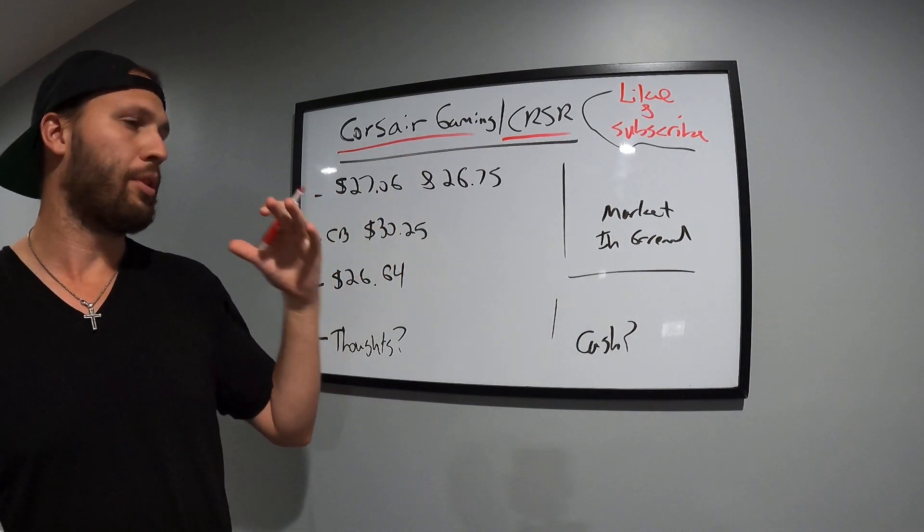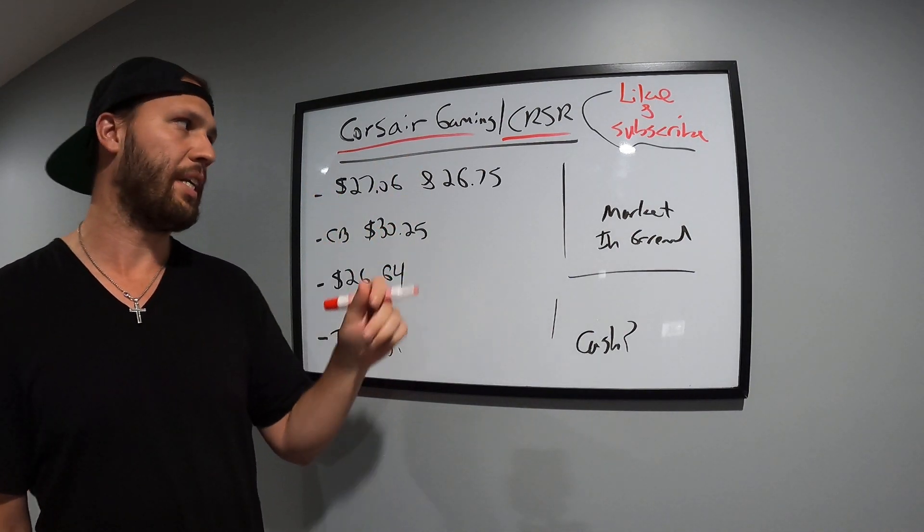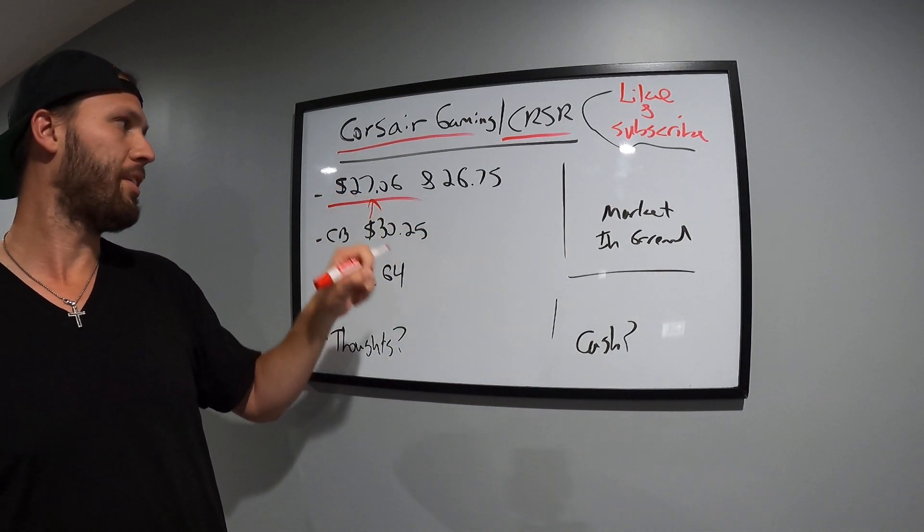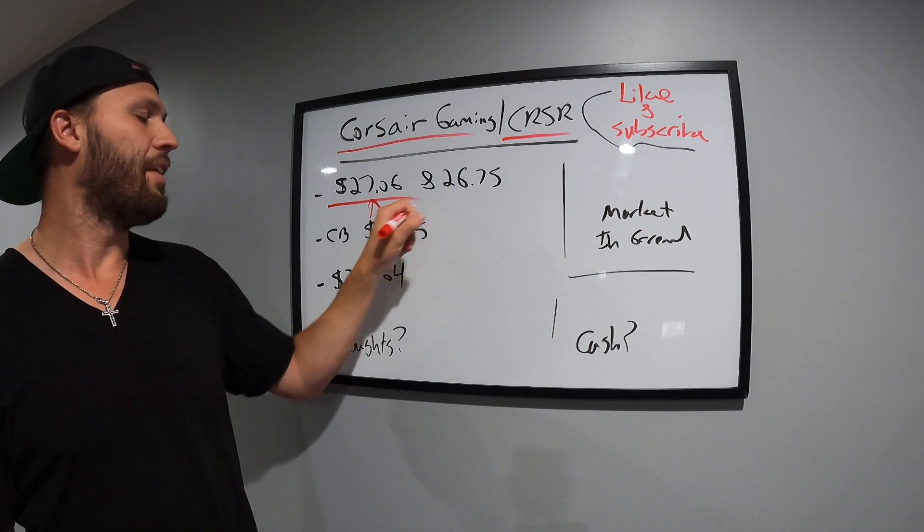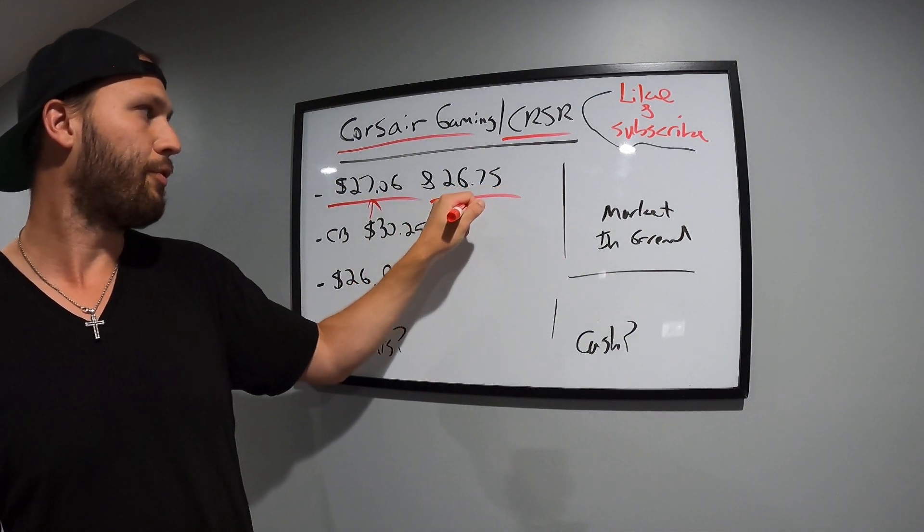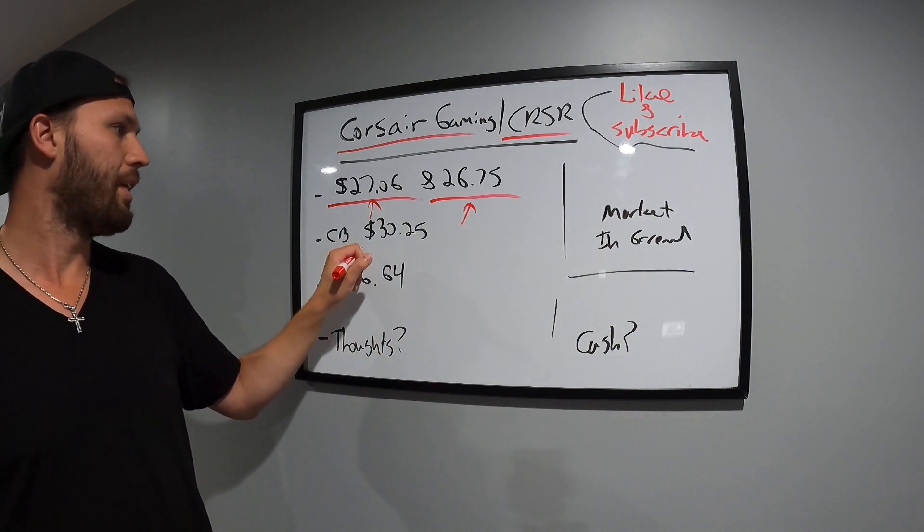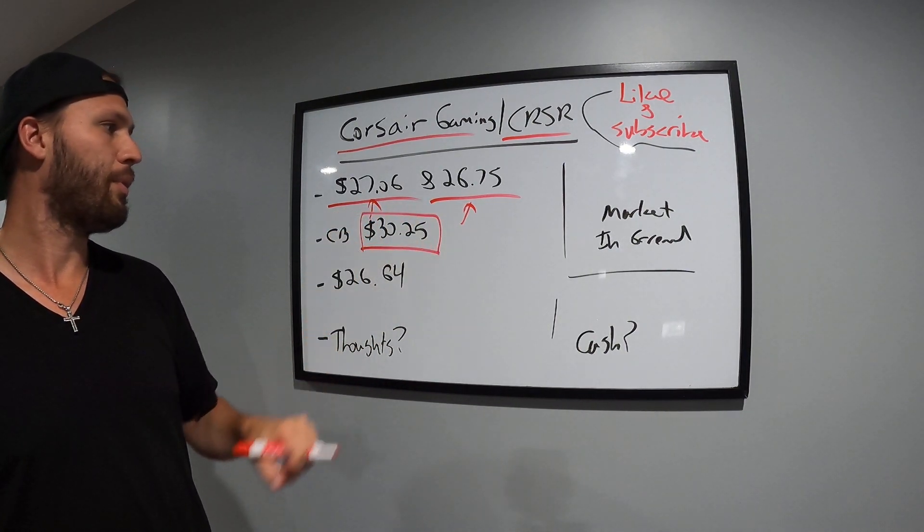What I did yesterday was when the market opened up before the meeting, I saw a massive correction in Corsair. I bought at $27.06, and then after the meeting it went down even farther and I bought at $26.75. So my cost base now has moved down to $30.25.